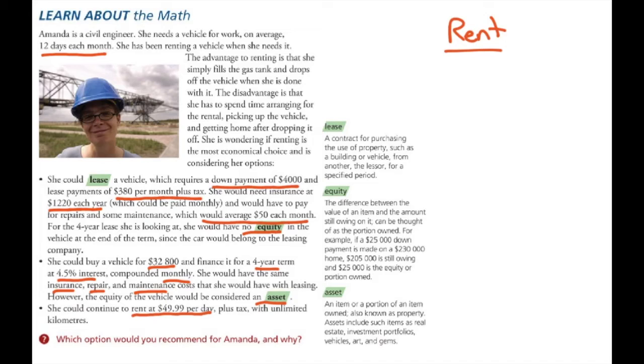We need a common frame of reference, so let's look at monthly cost. So in one month, she would rent this car on average 12 days. So her cost to rent this car would be $49.99 times 12, which would be $599.88 per month.